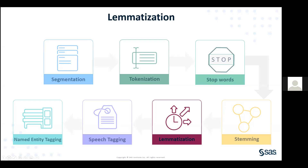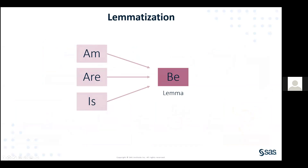With lemmatization, it's very similar to stemming. What it does is group together words with different inflected forms of a word to the lemma, which is the base word. It's similar to stemming — mapping several words into one common root word. But the main difference between stemming and lemmatization is that the output for lemmatization is a proper word, whereas with stemming it's just prefixes or suffixes.